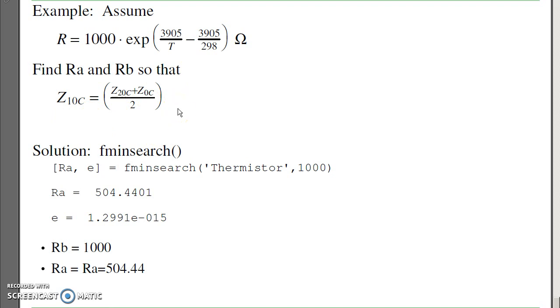There's multiple solutions. Here I just use F-search. I'm going to guess 1000 ohms and it tells me what RA should be. It should be 504 ohms. So assuming RB is 1000, there's RA.